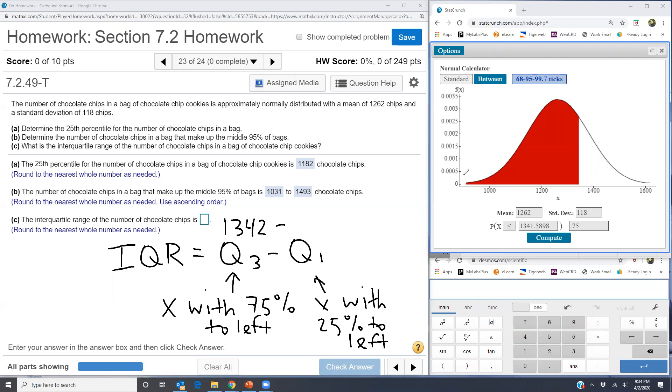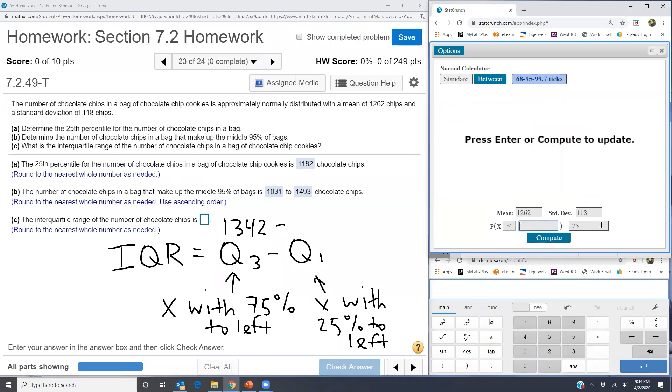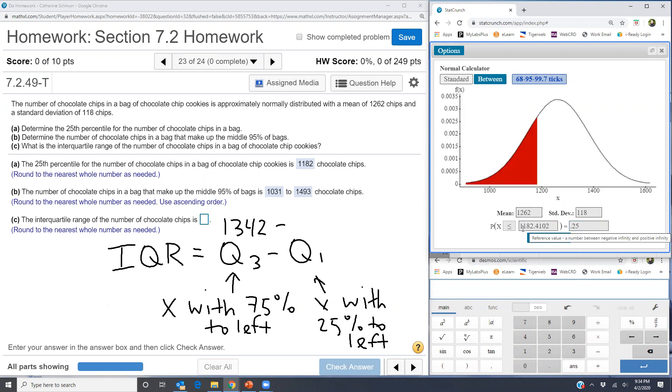And my Q1, I'm going to come back to my normal calculator, leave a blank in the x part and put in 0.25 for the area to the left. And that gives me my first quartile 1182. So I have 1182.